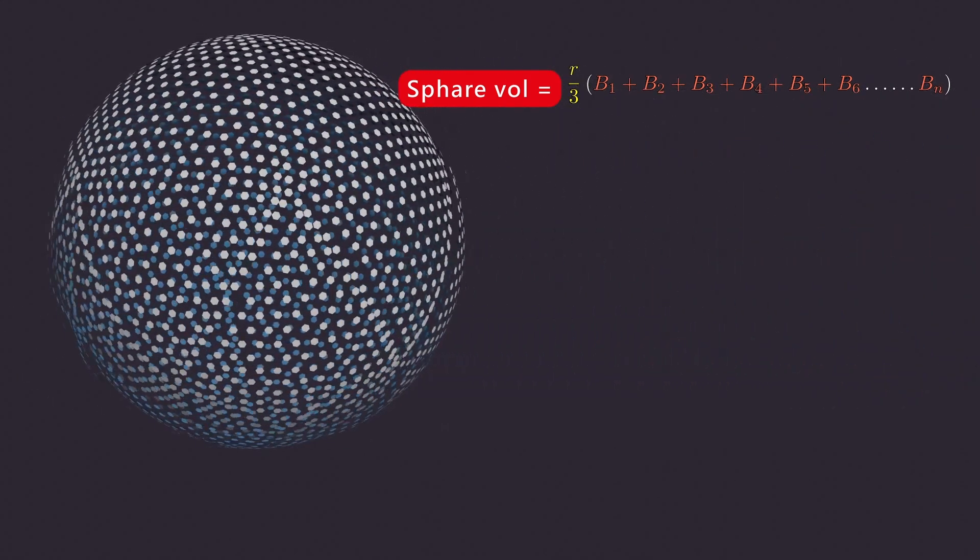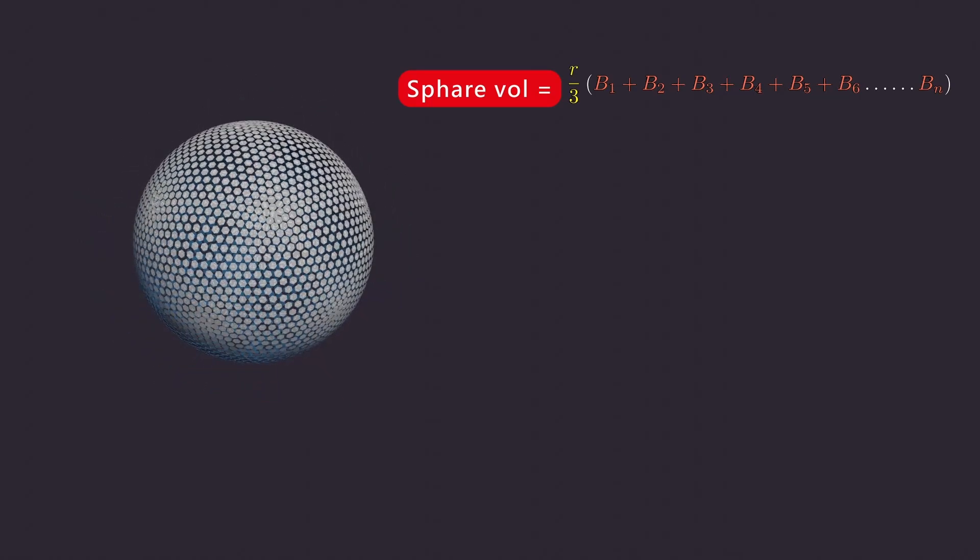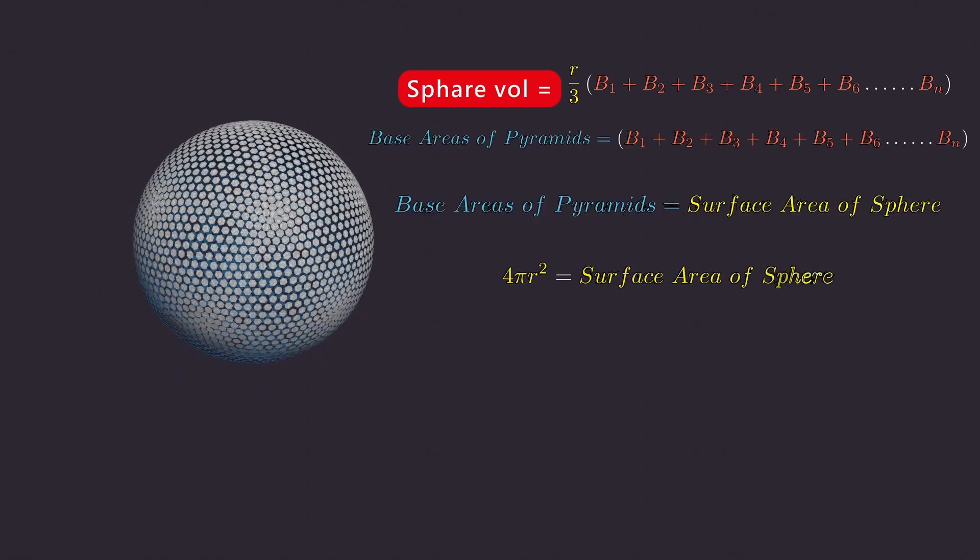Since the sum of all the base areas of the hexagonal pyramids is equal to the surface area of the sphere, which is 4πR².